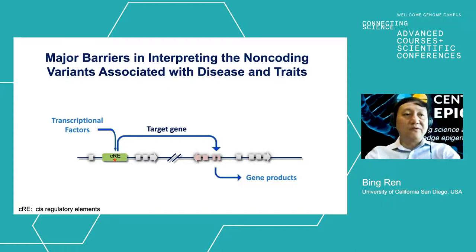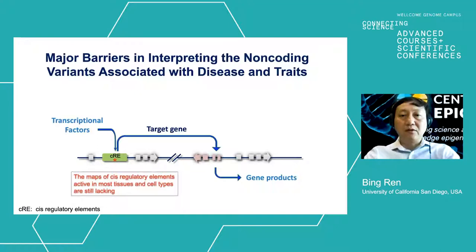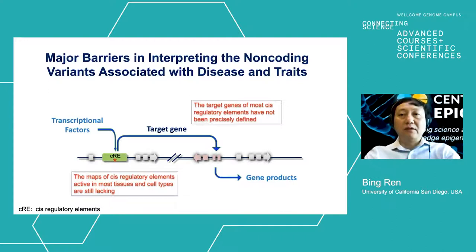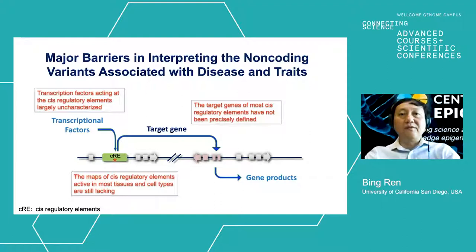However, to broadly apply this theory to human traits and disease, we face major hurdles. First, the maps of the transcriptional regulatory elements in most tissues or cell types are still lacking. And second, the target genes of most regulatory elements have not yet been precisely defined. And thirdly, how transcription factor binding to such regulatory elements is affected by the variants is still unknown.